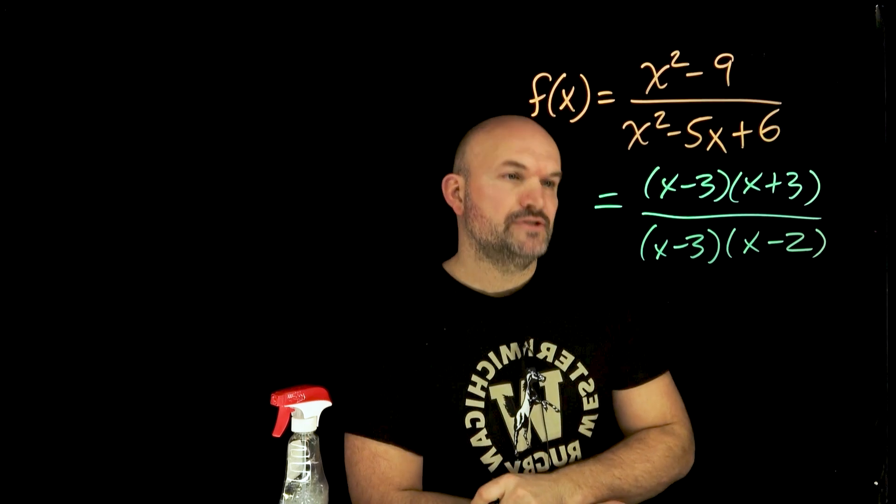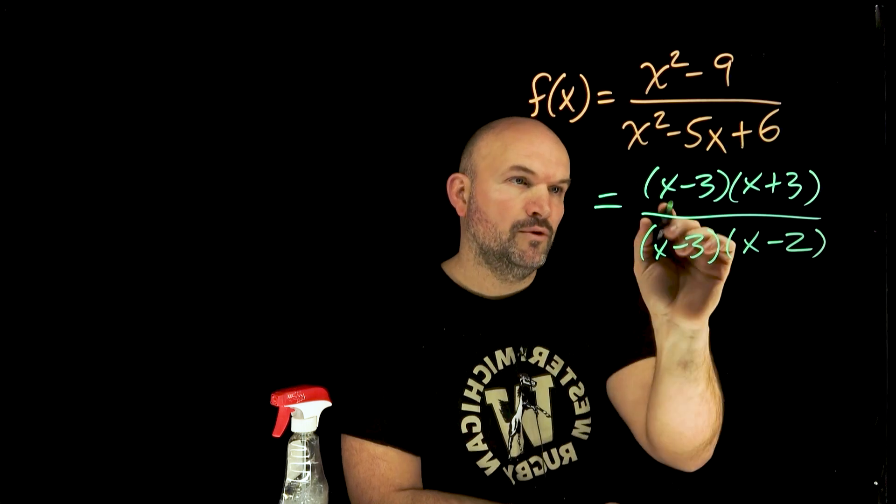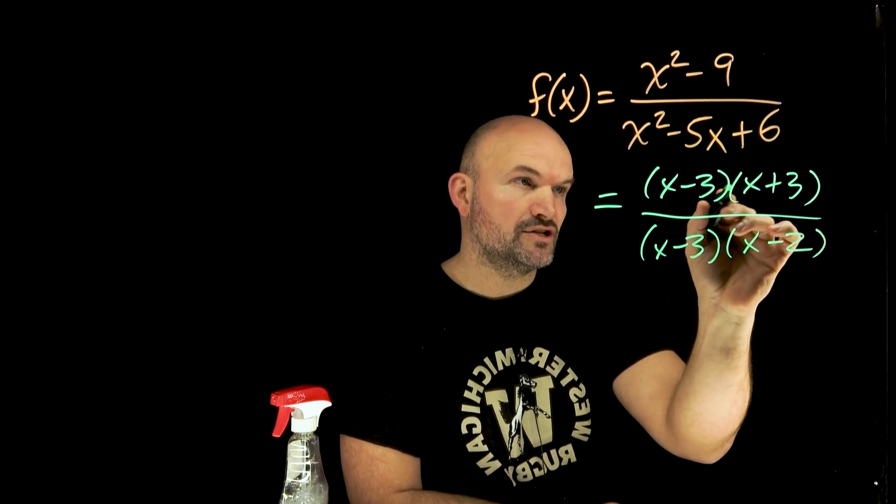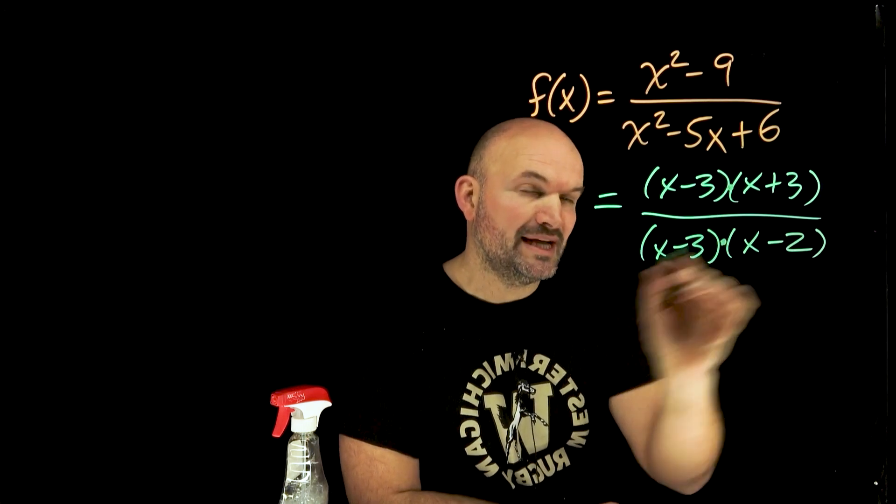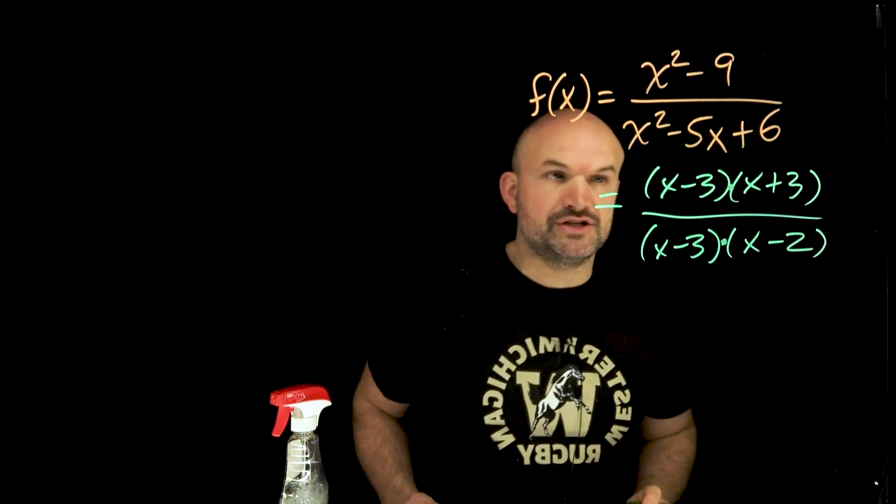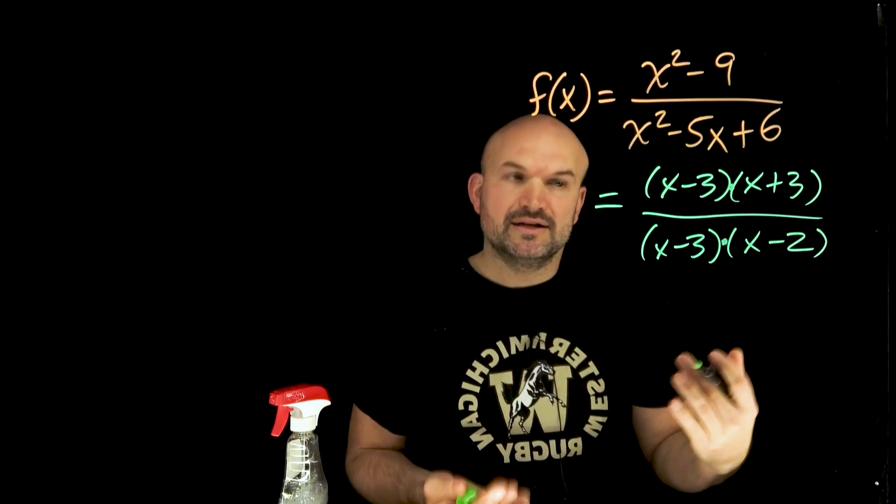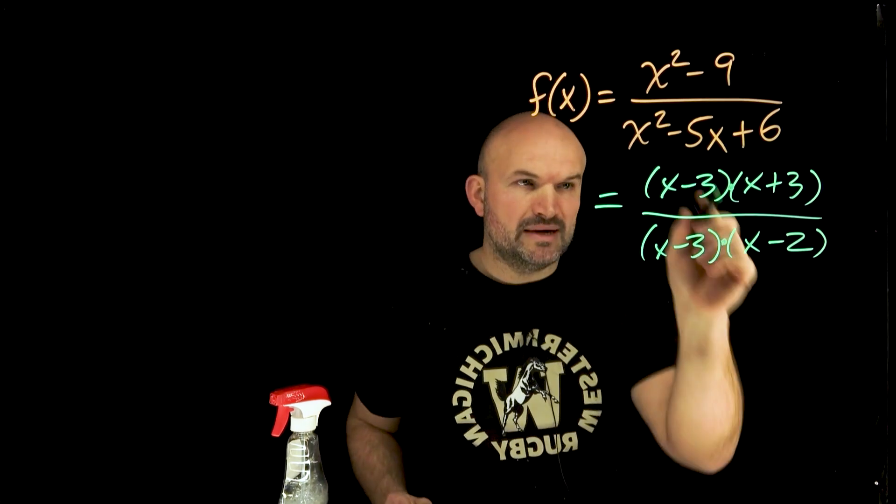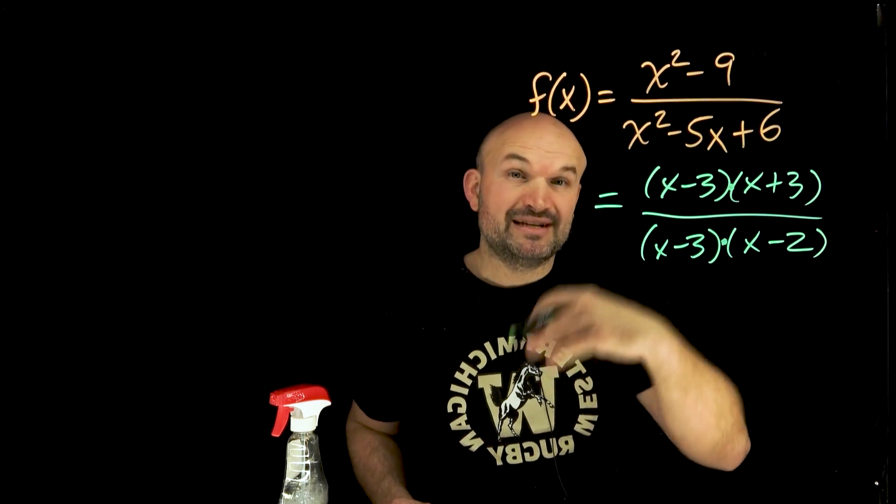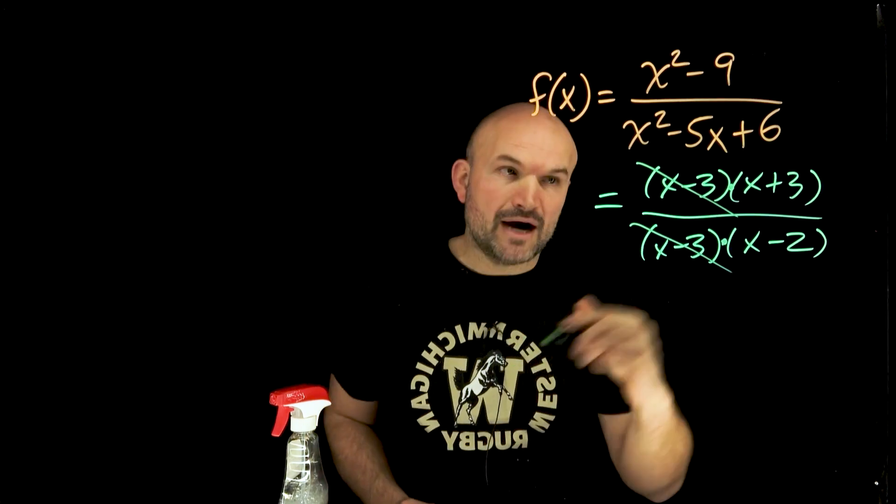So here's what we have. We have now our numerator and denominator in factored form. We have these quantities - expressions that are separated by multiplication. And that's critically important because when we have terms separated by multiplication, we can now apply the division property. Basically dividing out those terms because it's going to equal one. So what I see here is I have x minus three divided by x minus three. Since they're exactly the same, we can say that these are going to divide out to one.